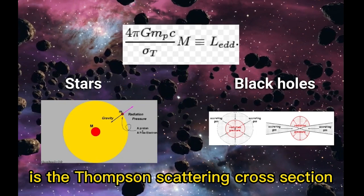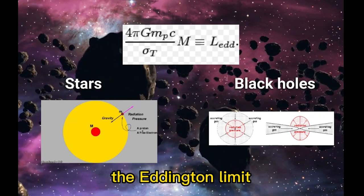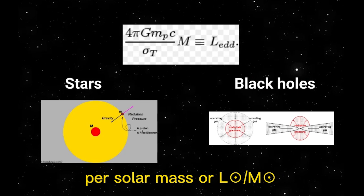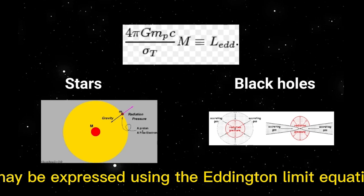The Eddington limit is expressed in units of solar luminosity per solar mass, or L/M. The luminosity of a source bounded by a surface S may be expressed using the Eddington limit equation L equals 4πGMc/κ.